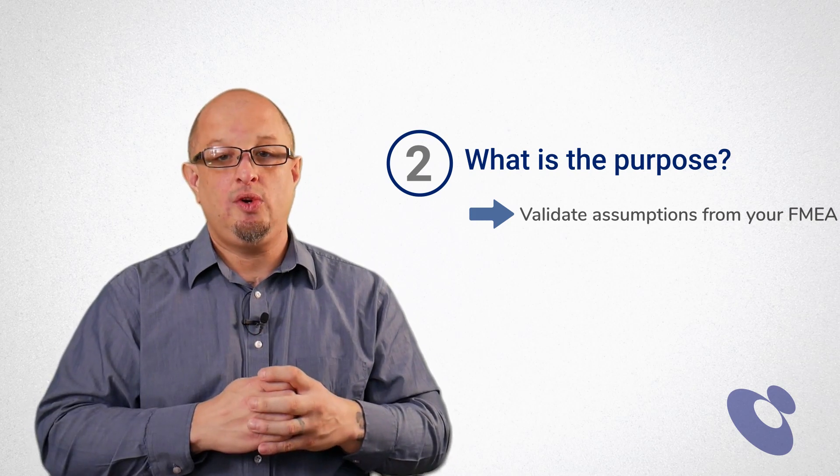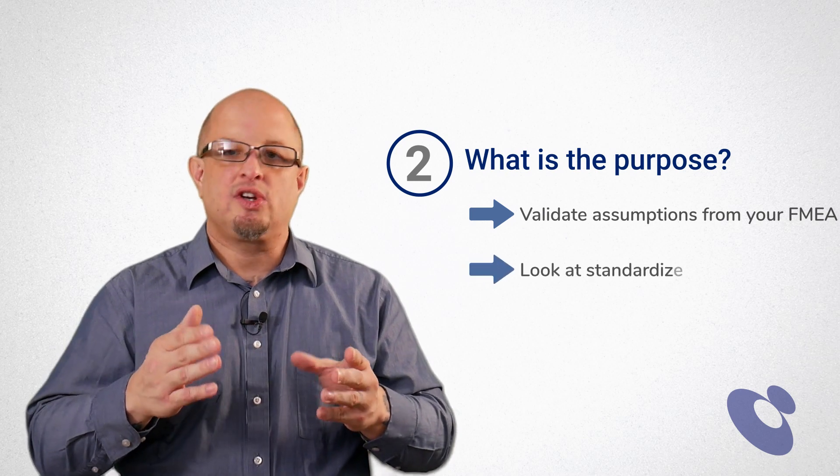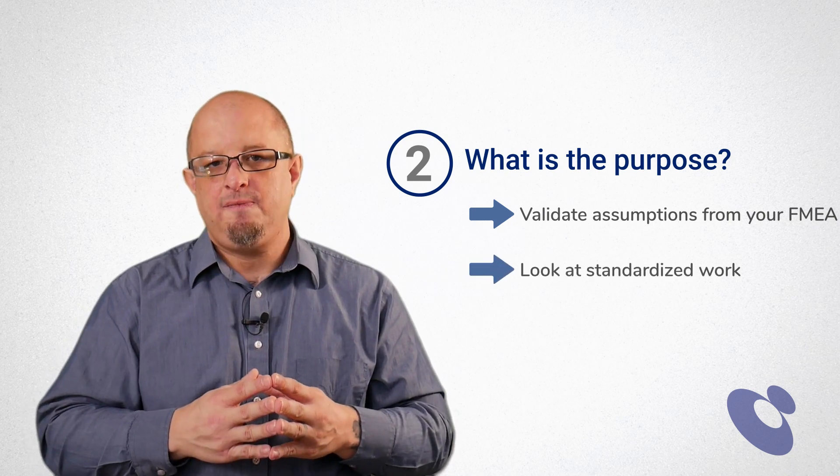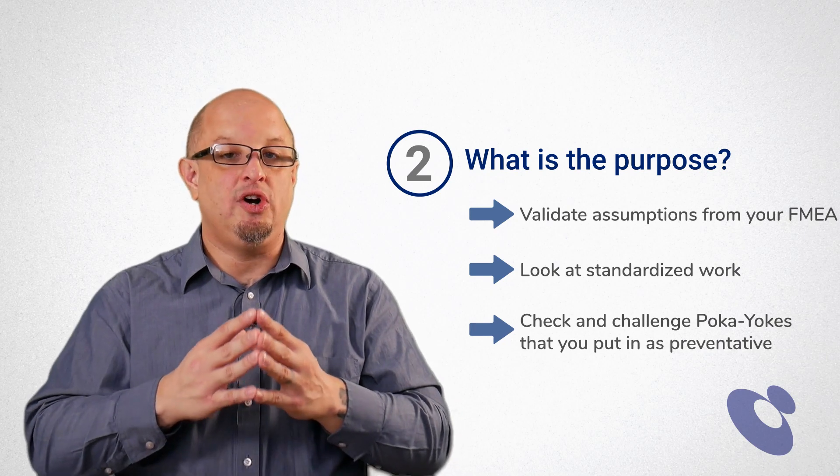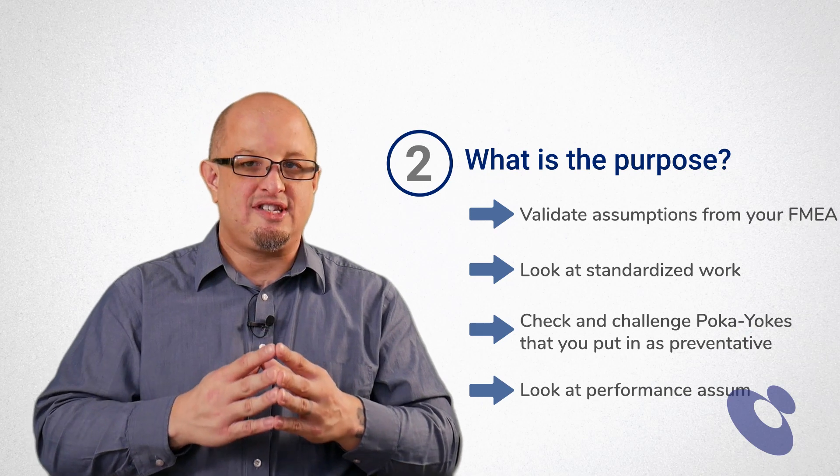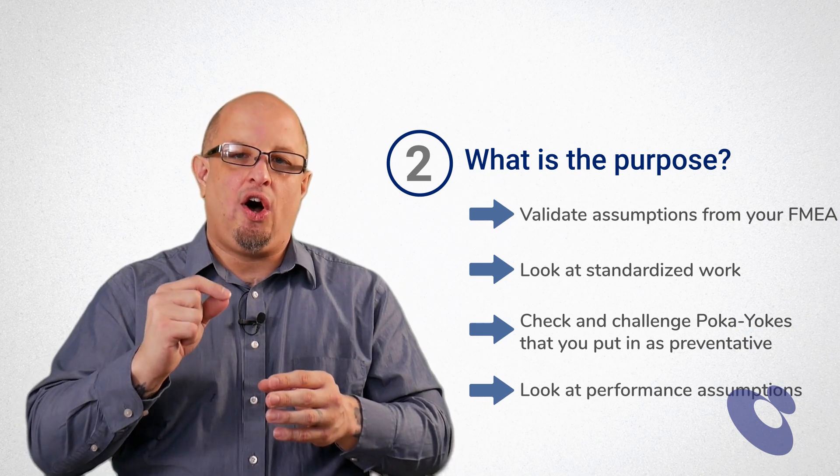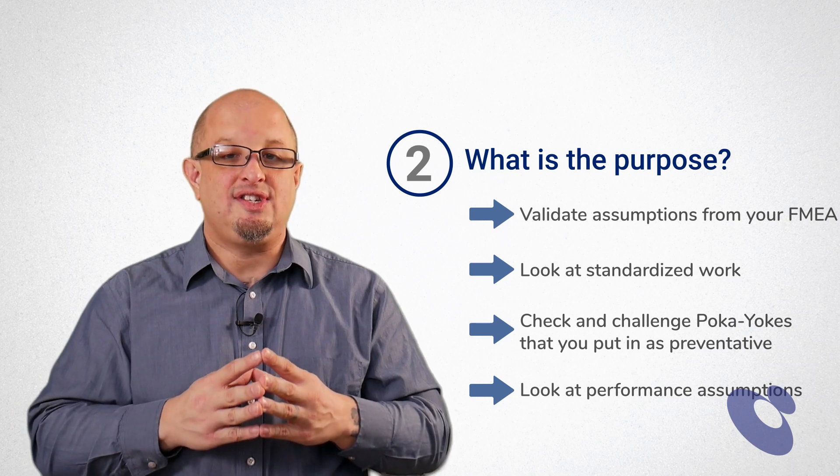So some of the things that you'll do during a reverse FMEA is you'll take a look at the standardized work that is actually going on in the operation. You're going to check and challenge some of the poke yokes that you had put in as preventative. And you're going to be looking at the performance assumptions you made early on in the program to determine if the performance assumptions still held.